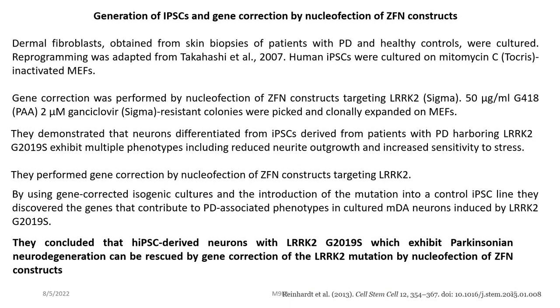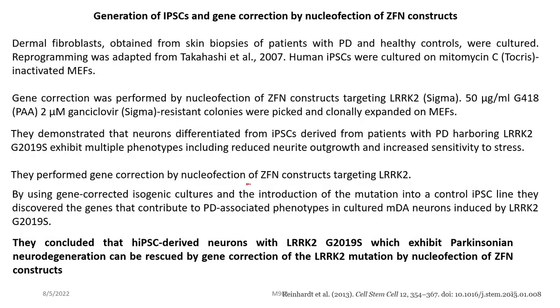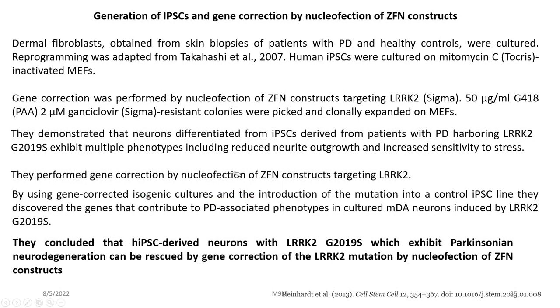Gene correction was performed by nucleofection of ZFN constructs targeting LRKK2. They demonstrated that neurons differentiated from IPSCs derived from patients with Parkinson's disease harboring LRKK2 G2019S exhibit multiple phenotypes, including reduced neurite outgrowth and increased sensitivity to stress. Gene correction was performed by nucleofection of ZFN constructs targeting the LRKK2 gene.